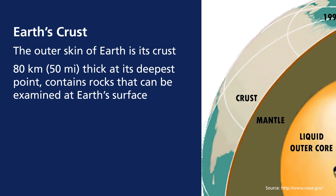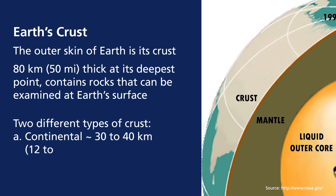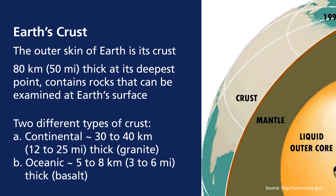The Earth's crust is the outer thin layer of the Earth — approximately 80 kilometers thick at its deepest point. It contains rocks that can be examined at Earth's surface, so here we have direct contact with the geosphere. There are two different types of crust: the continental crust, the land part, is 30 to 40 kilometers thick and composed mostly of granite. The oceanic crust is anywhere from 5 to 8 kilometers thick and is composed of basalt.